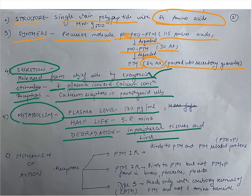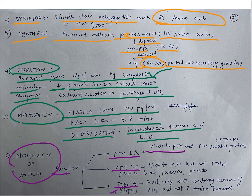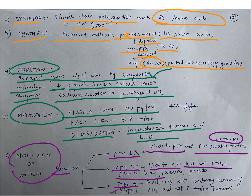Now let's see the mechanism of action. Three types of receptors are seen: PTH1R, PTH2R, and type 3, which is CPTH1R. PTH1R binds to PTH and PTH-related proteins. PTH2R binds to PTH but not to PTHrP, and is found in the brain, pancreas, and placenta. Type 3 CPTH reacts only with the carboxy terminal of PTH, but not with the amino terminal.